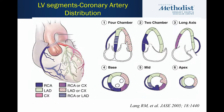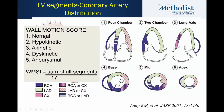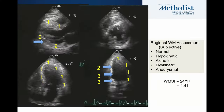This diagram was published in the ASE guidelines for segmentation of the left ventricle. We use 17 segments — three for each of the walls and then the apex, with the tip of the apex as the 17th segment. Each segment is scored: one for normal, two for hypokinesis, three for akinesis, four for dyskinesis, and five for frank aneurysm. The sum of all segment scores is divided by 17 to get a wall motion score index, so a totally normal ventricle would have an index of one.